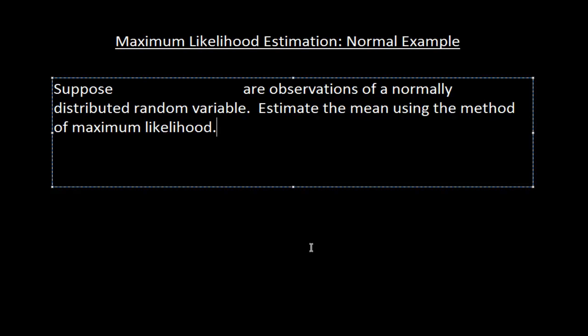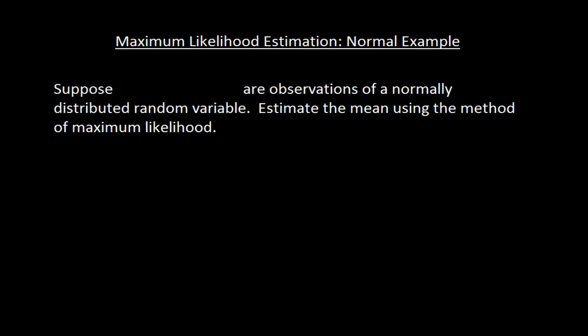Okay, so let me write in my observations here. I've got x1, x2, all the way up to xn. We'll recall that the PDF for a normal random variable is f sub x of x is equal to, it's sort of ugly, 1 over the square root of 2 pi sigma times e to the negative x minus mu squared over 2 sigma squared.